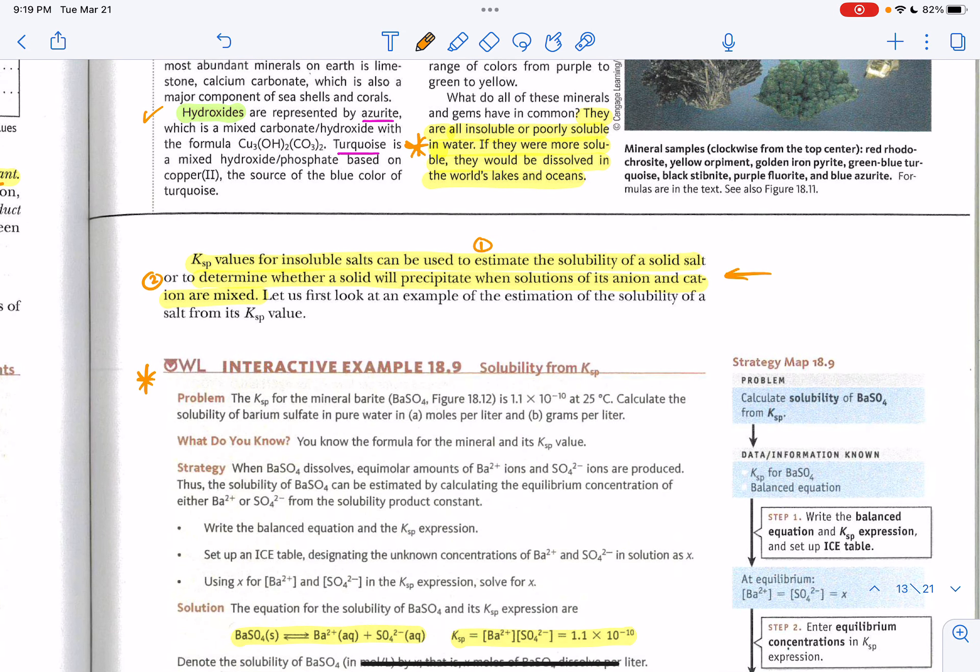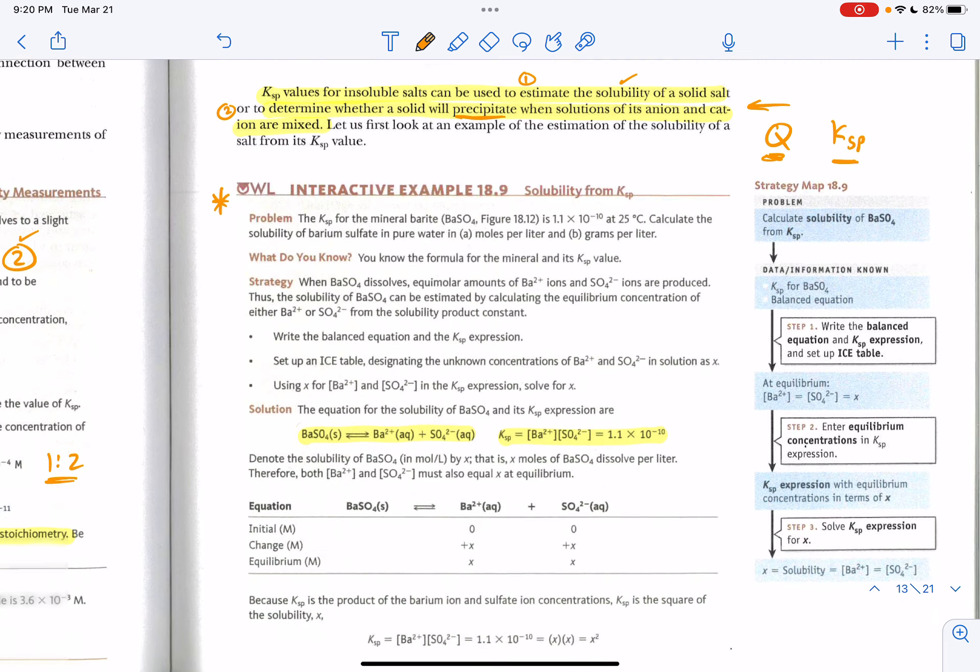Just a reminder: Ksp values for insoluble salts can be used to do two things. To estimate the solubility of the solid salt or determine whether or not you're going to get a precipitate. You might be given several concentrations and you don't know whether you have a precipitate or not. In those problems, we do everything we were doing before except we call it Q instead of K. Just like in a previous chapter, we're going to compare Q to the Ksp to see which is bigger. If Q is bigger, that means we are past our saturation point and we're going to have a precipitate. If the Ksp is bigger than Q, it means we have not saturated the solution yet.